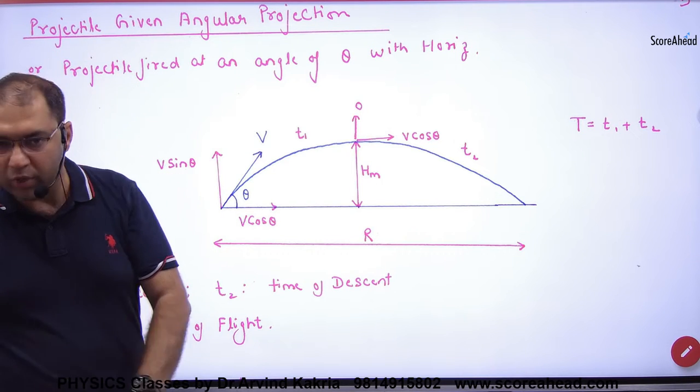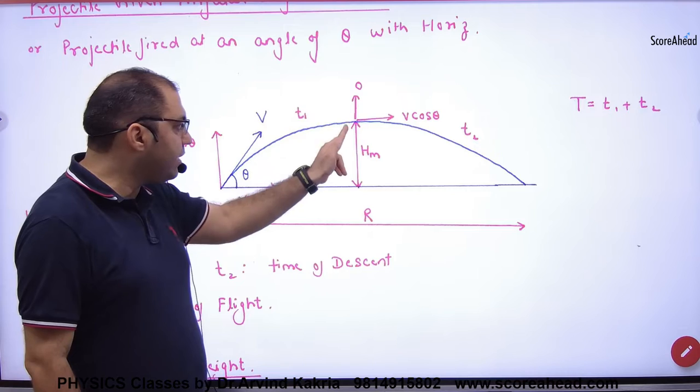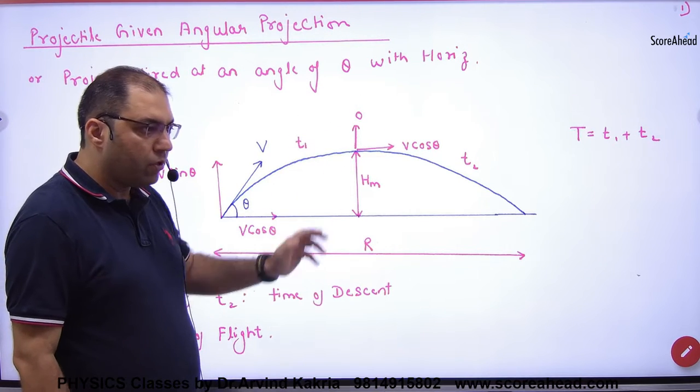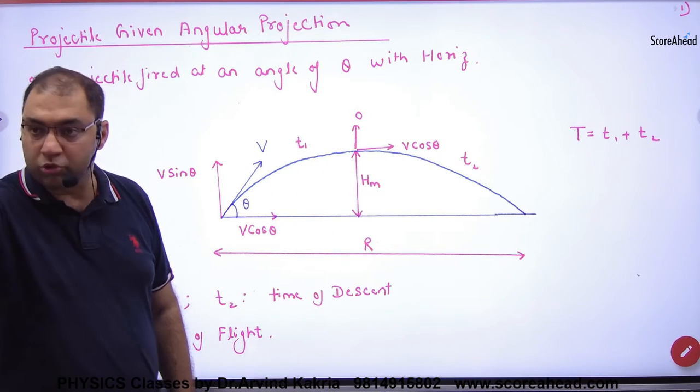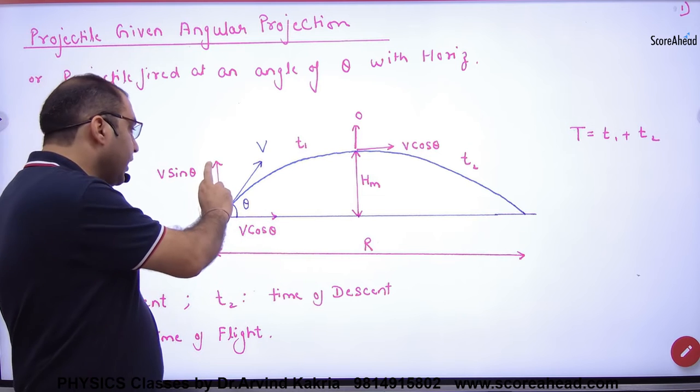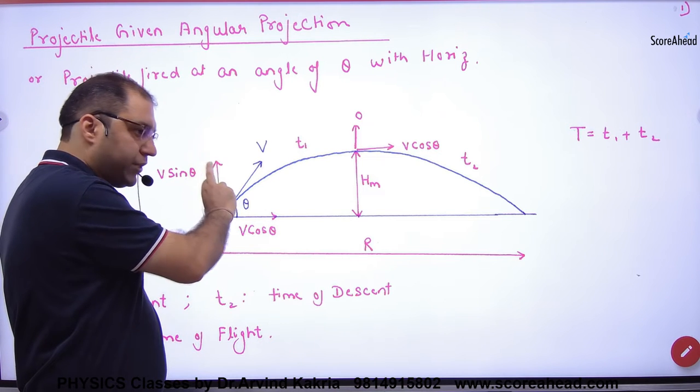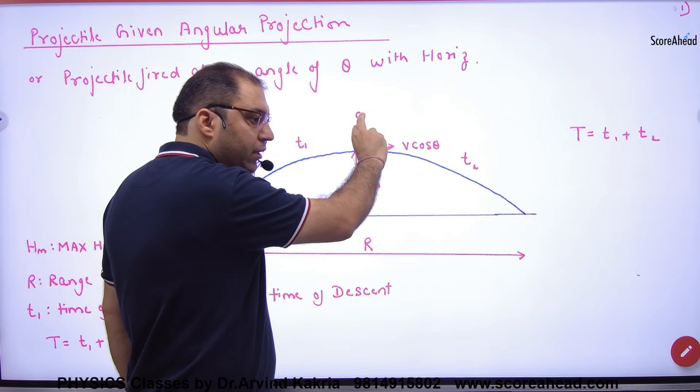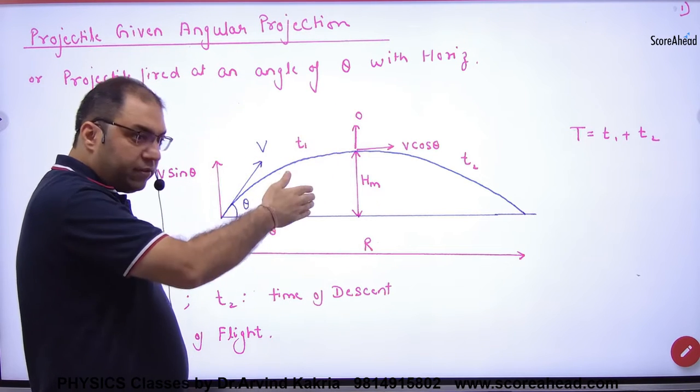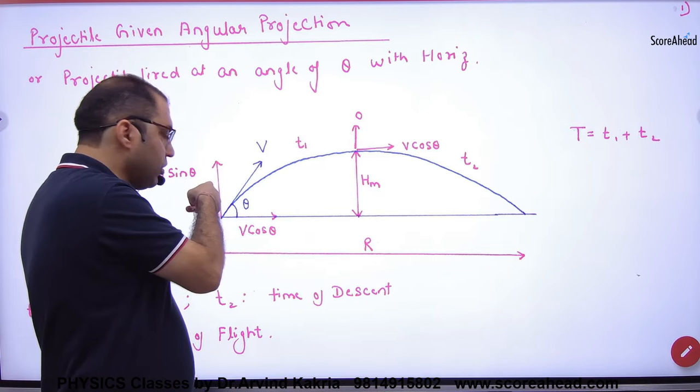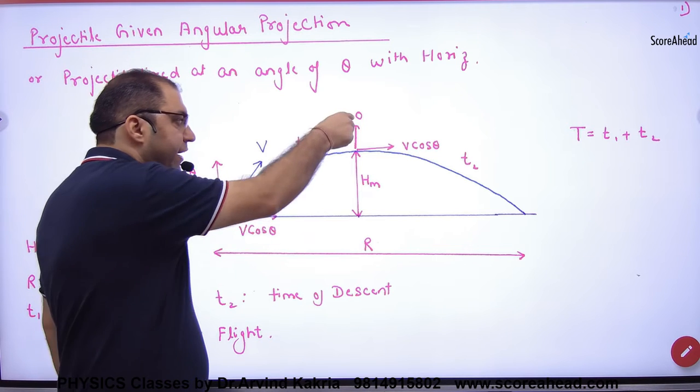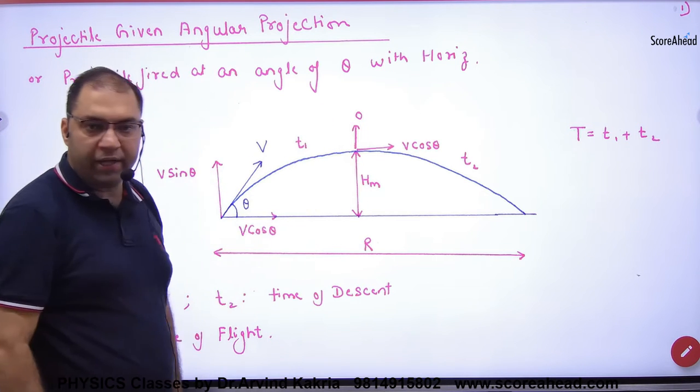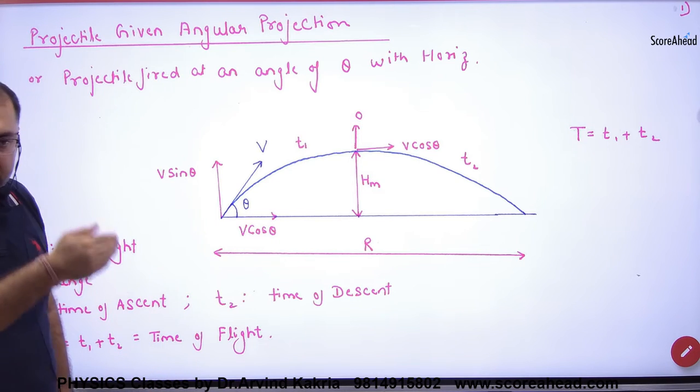H_m. So let's tell you that when the projectile went here from here, I'm talking about y-axis. What is the initial velocity? V sin theta. Then what is the final velocity here? Zero. So y-axis here, initial velocity v sin theta, final velocity zero, and what is the maximum height? H_m.